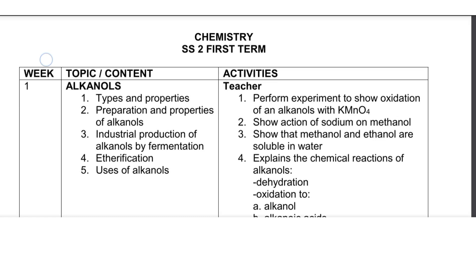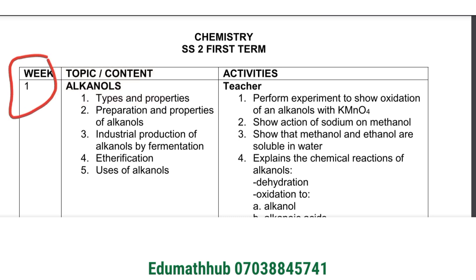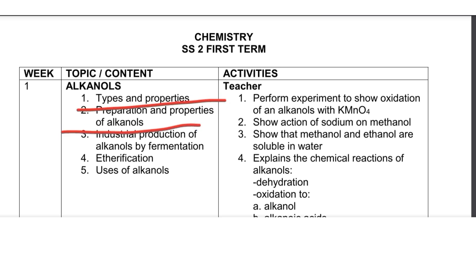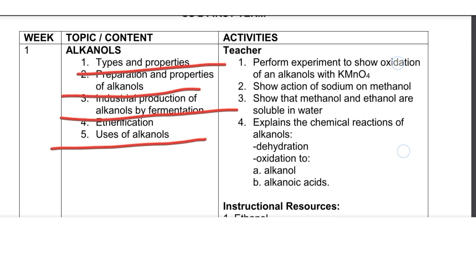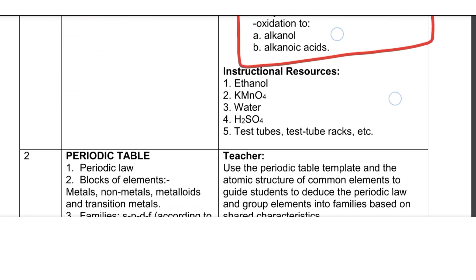This is the scheme of work for SS2 first-term Chemistry. For week one, we're going to be learning about alkanols, which is under organic chemistry. We'll be learning about the types and properties of alkanols, preparation of alkanols, industrial production, fermentation, esterification, and uses of alkanols. Your teacher will make sure you understand all these key points.